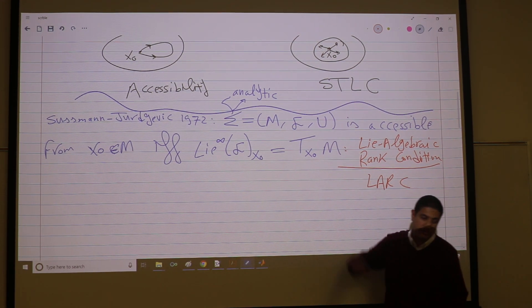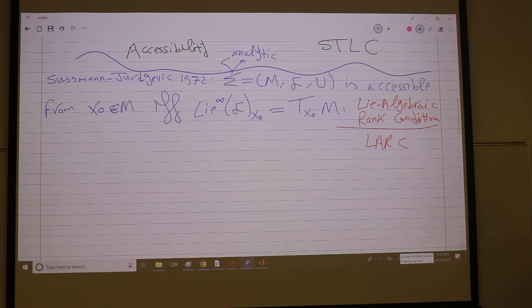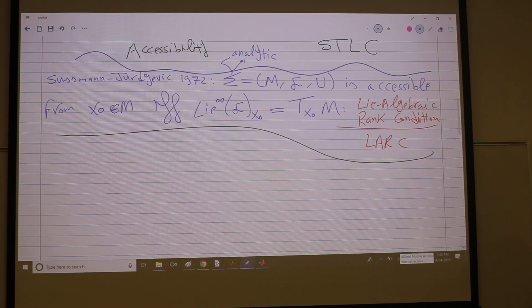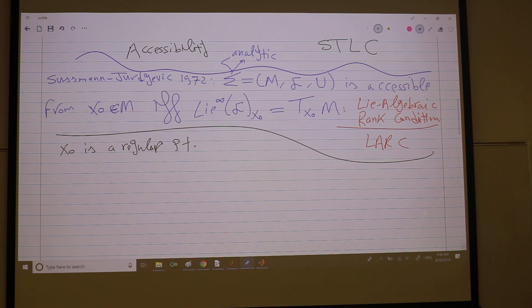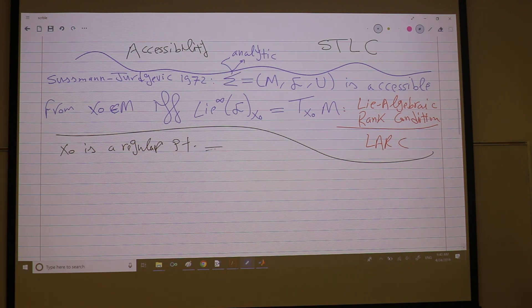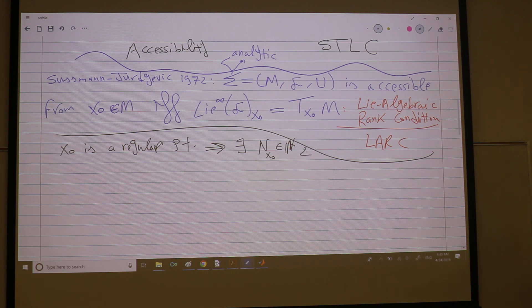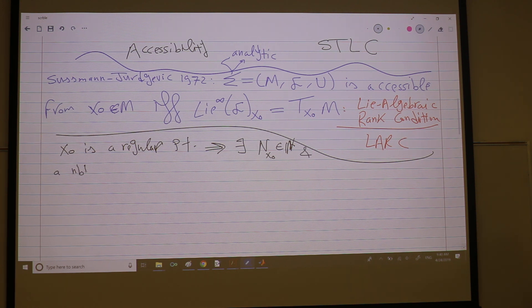Do we need to go to infinity? Because we will never be able to go to infinity, right? Luckily, no. So we have this lemma that if x naught is a regular point, there exists some n natural number, might depend on x naught of course, and a neighborhood u of x naught.